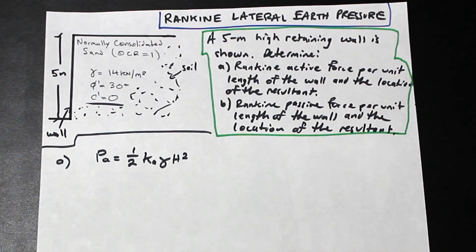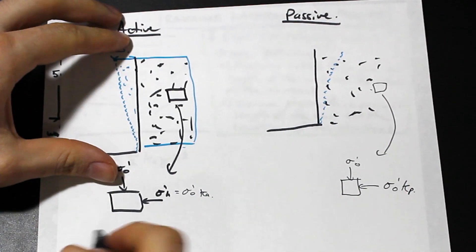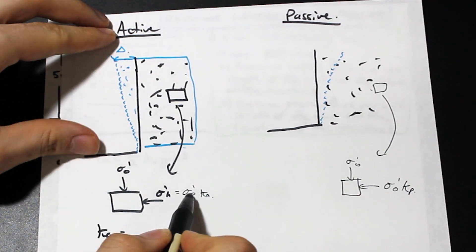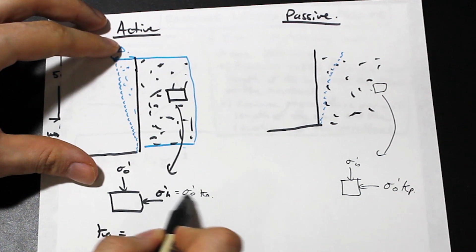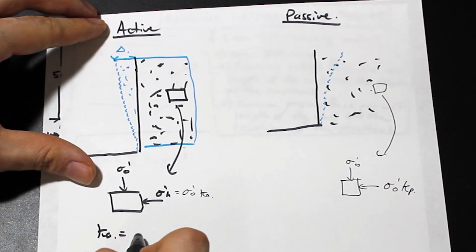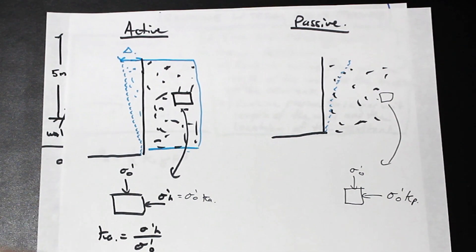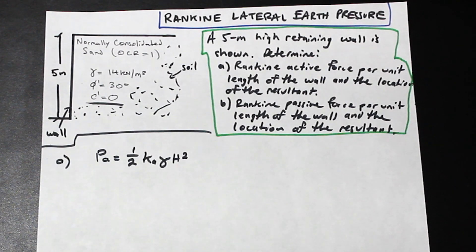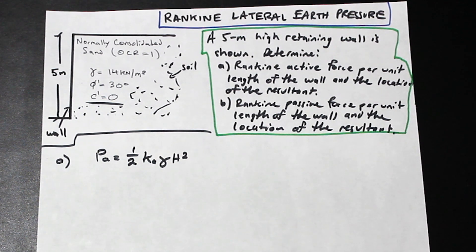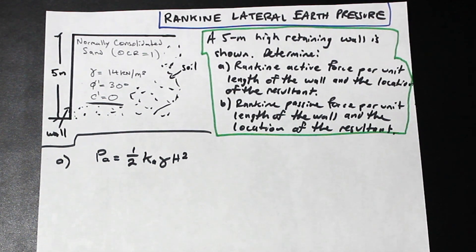So that's Rankine's earth pressure in a nutshell — there is a lot more to it. Ka is the effective horizontal stress over the effective vertical stress on a given element in the soil. Let's take a look at what the formulas are, and then we're going to go ahead and solve the problem.